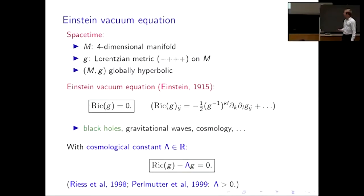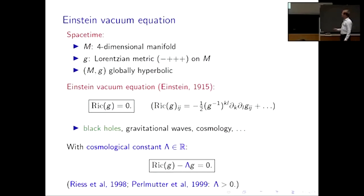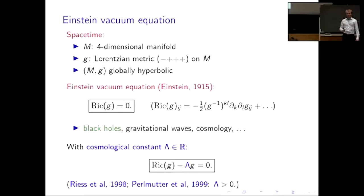Even the vacuum equation is extremely rich in geometry and dynamics and describes things such as black holes, which will be the main player of the talk. There is a generalization also proposed by Einstein involving an extra parameter lambda, the cosmological constant, where you demand that the Ricci tensor is proportional to the metric with this proportionality factor. According to the Nobel Prize committee, lambda is positive, and that is what the main theorem will also be about.